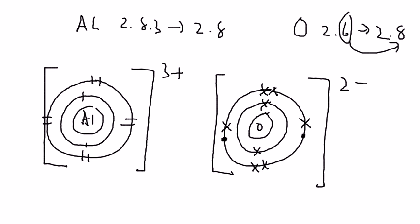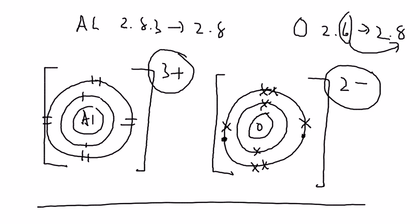Now, this is not the final yet. Because if you stop here, your diagram will be wrong. The reason why? Because the total charges are different. In order to draw a correct dot and cross diagram for ionic bonding, you have to make sure the total positive charge must equal to the total negative charge. So how to make them equal? This is 3 plus, this is 2 negative. So what you can do is you times 2.